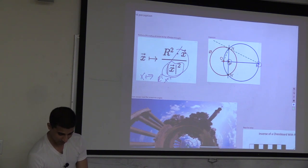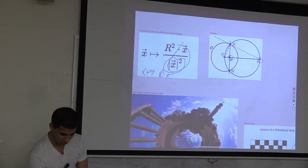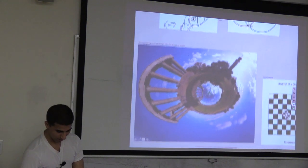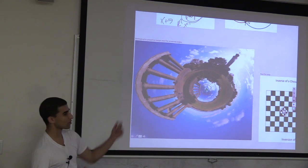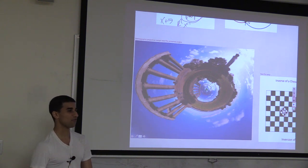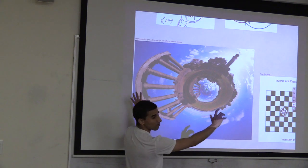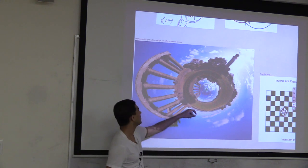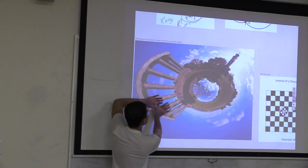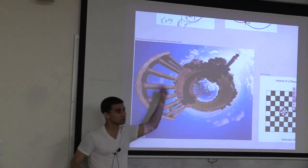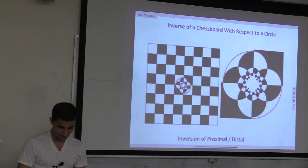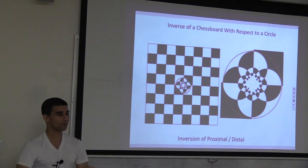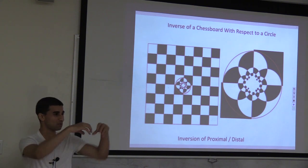An illustration of circle inversion: the inverse of a point through the red circle is another point. This is essentially stereographic projection. You end up swapping near and far: things originally far away go into the middle, things close by get enormous and hang out near the edges. Like inverting a chess board through a circle - the patterns wrap around and keep nesting.